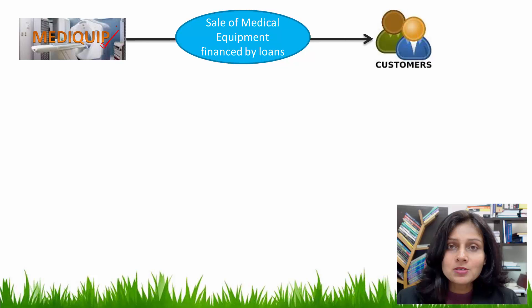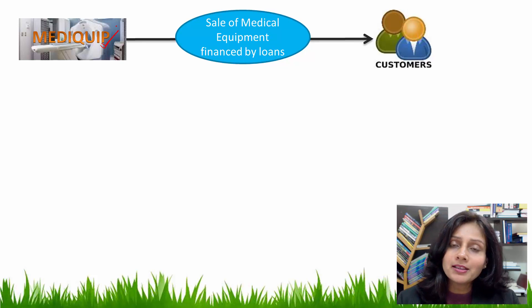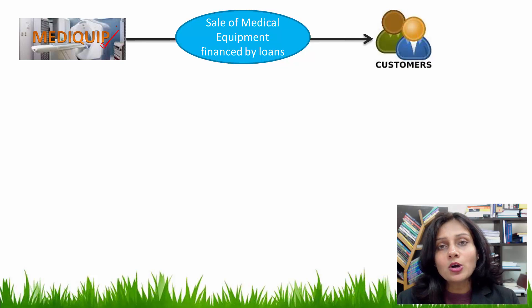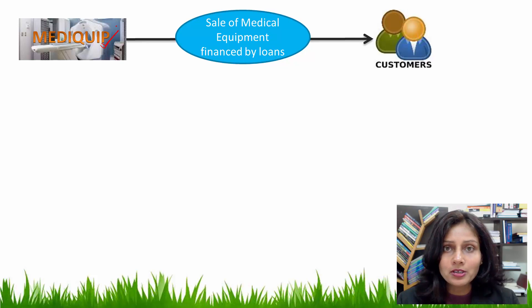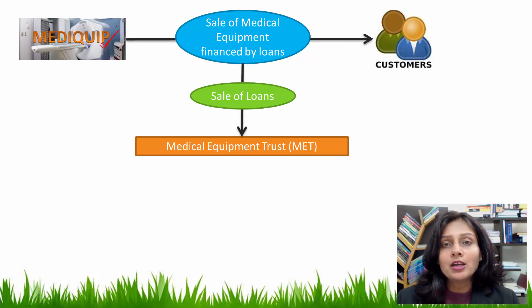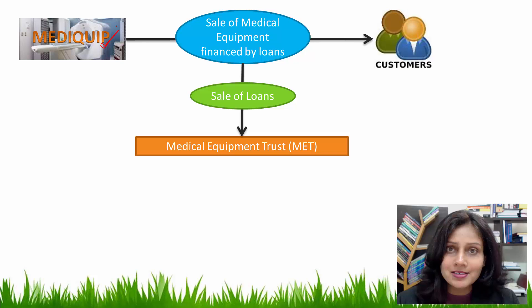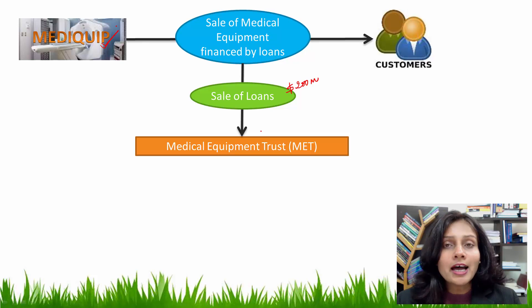Let me make you better understand this theory through a diagram. MediCube is our manufacturer of medical equipment. MediCube sells its medical equipment to its customers, which is financed by a loan. In a regular scenario where securitization is not done, the customers would make monthly payments and the outstanding loan balance would sit on the asset side of MediCube's balance sheet. However, now that MediCube has decided to securitize these loans, it will be selling these loans to the special purpose entity — the Medical Equipment Trust. Because this is a sale, and these loans have a value of $200 million, Medical Equipment Trust must pay $200 million to MediCube.